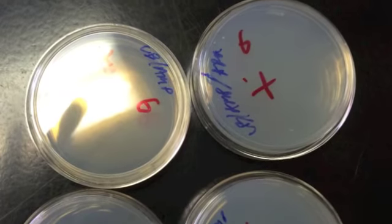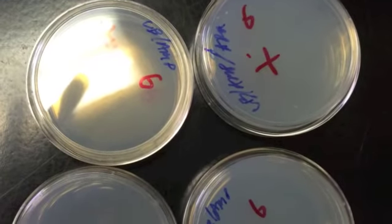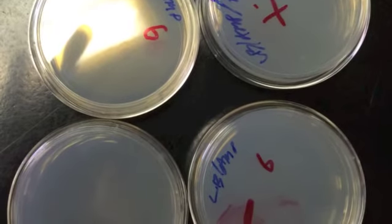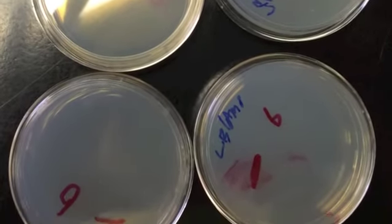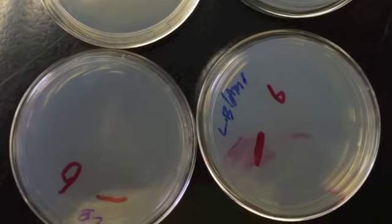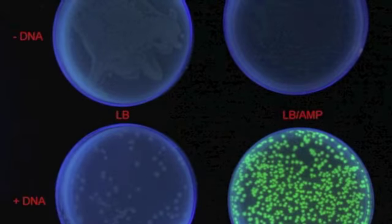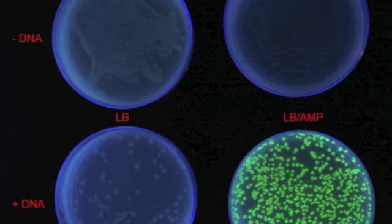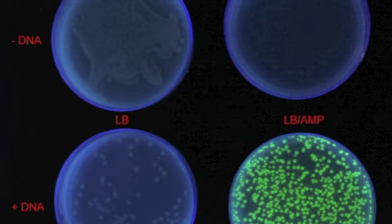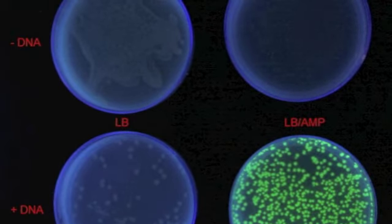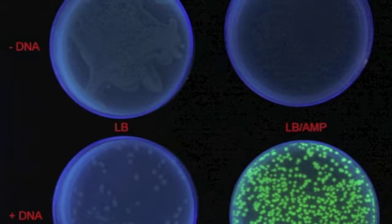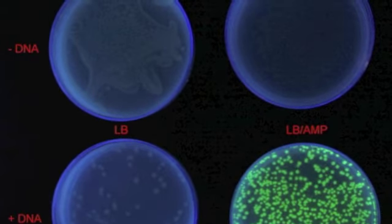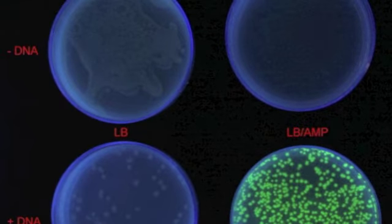In the pGLO lab, we got bacteria to take up a plasmid with the GFP gene on it. This gene was controlled by an operon that was activated by arabinose sugar, so in the presence of arabinose sugar, the bacteria would produce GFP. When the bacteria were incubated on a plate of agar with arabinose, they were able to produce GFP and glow green under UV light.